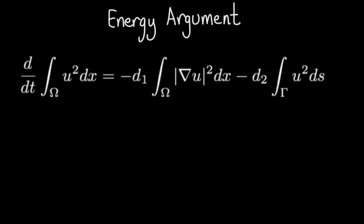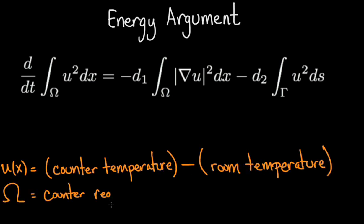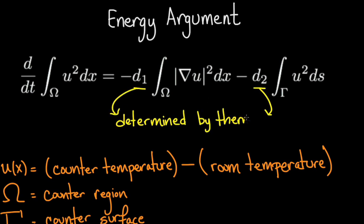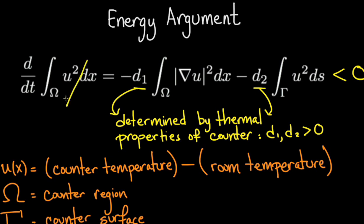One way to determine if the equilibrium of this partial differential equation is stable is to apply an energy argument. Manipulation of this heat equation permits us to derive a relationship that describes how the mean square departure of the counter temperature from room temperature evolves over time, as shown here. Note u of x is the deviation of the temperature in the counter from room temperature, omega is the counter region, and gamma is the counter surface. d1 and d2 are positive constants determined by the thermal properties of the counter. Because the right-hand side of this equation is negative, it drives the temperature fluctuations, the integral of ux squared over the counter region to zero. This energy argument is the mathematical prediction of the behavior we observe physically.